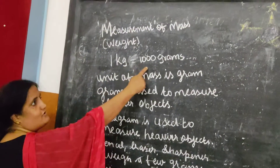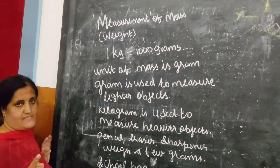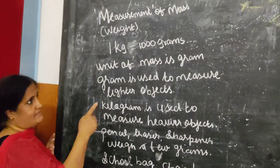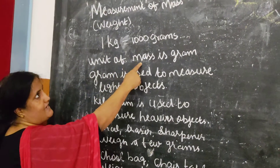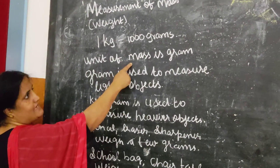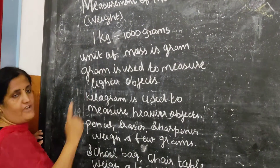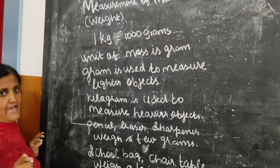One kilogram is equal to thousand grams. One kilogram, thousand grams. Unit of mass — unit of weight — is gram.